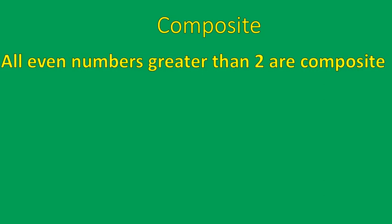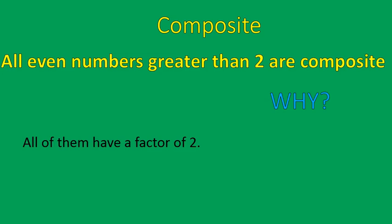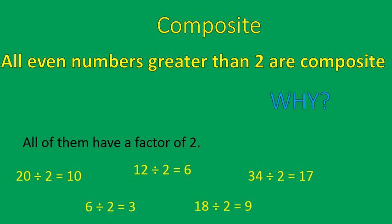One other thing: you can quickly tell if a number is composite. All even numbers greater than two are composite. Why? Because all of them have a factor of two. For example: twenty divided by two, twelve divided by two, thirty-four divided by two, six divided by two, eighteen divided by two. Any number ending in zero, two, four, six, or eight is going to be composite, because they all have at least one factor other than one and themselves, and that factor is two.